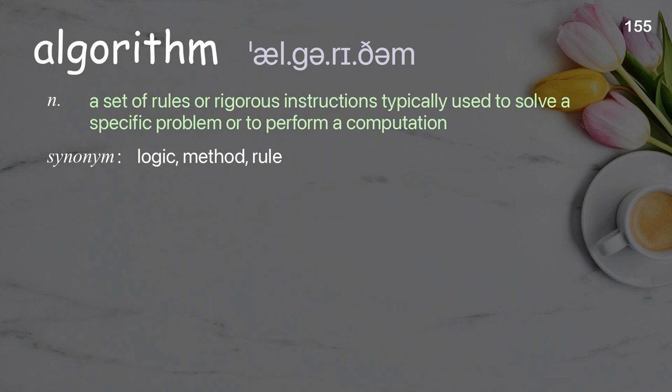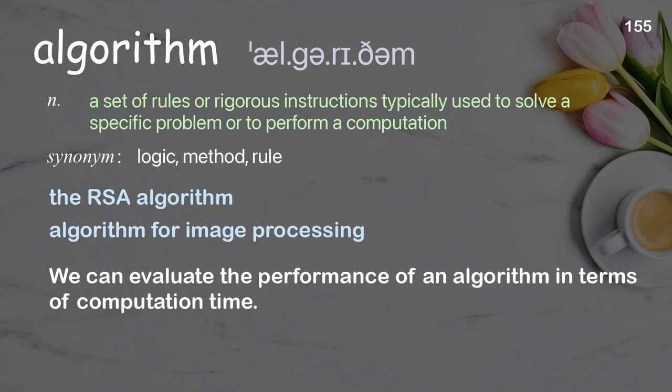Algorithm: a set of rules or rigorous instructions typically used to solve a specific problem or to perform a computation. Examples: the RSA algorithm; algorithm for image processing; we can evaluate the performance of an algorithm in terms of computation time.